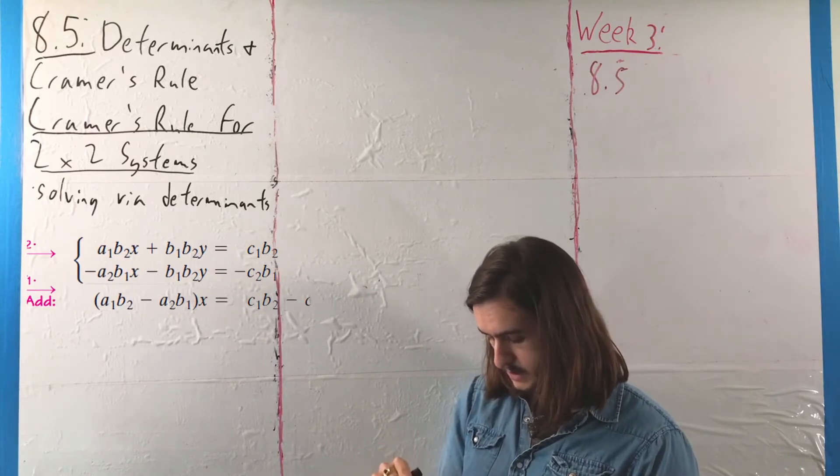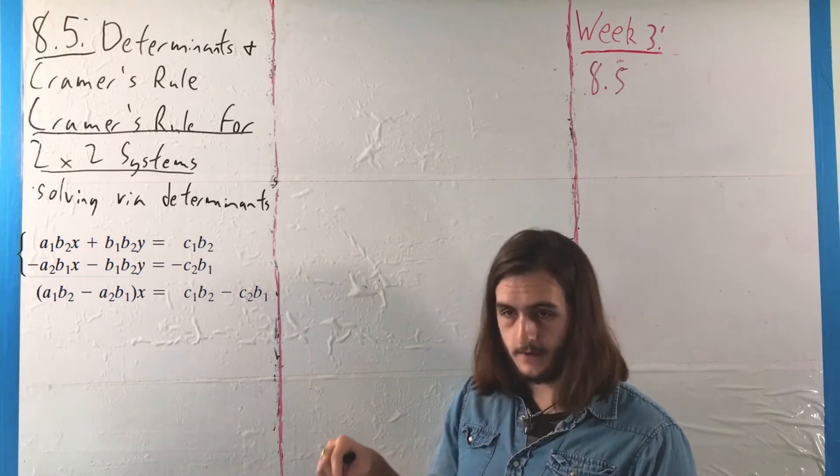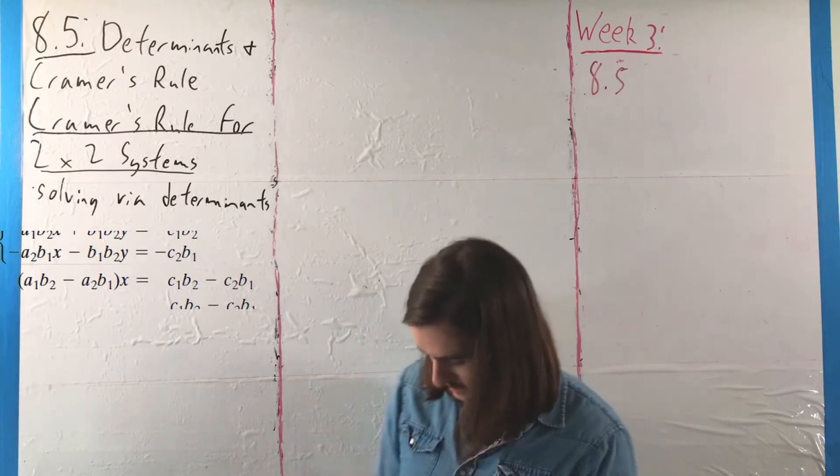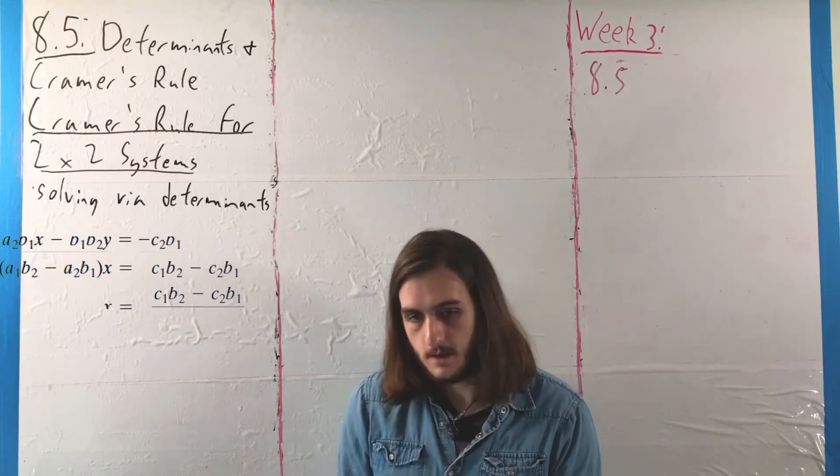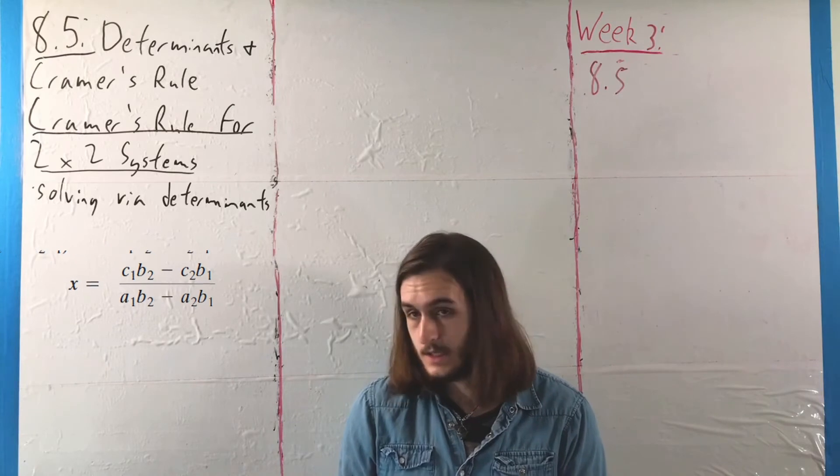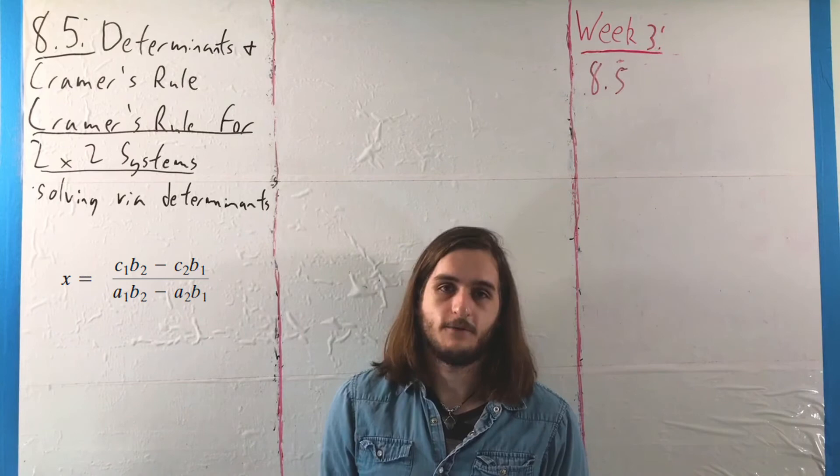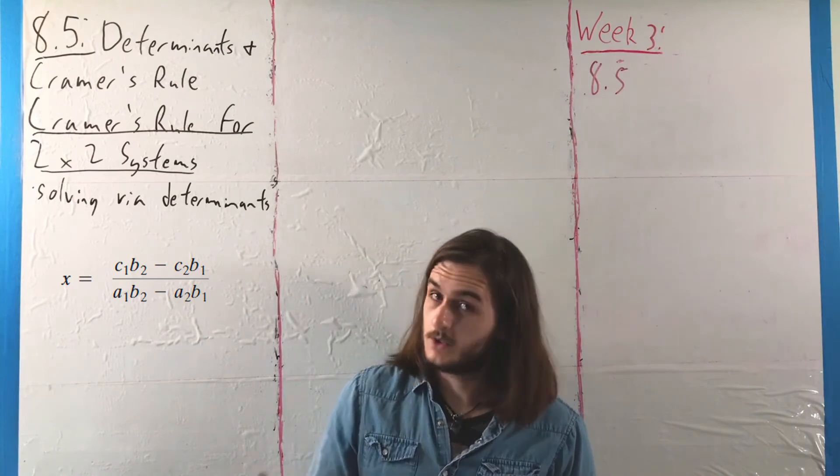C1B2 minus C2B1. And then we divide over, and we have that x is equal to a mess of constants: C1B2 minus C2B1 over A1B2 minus A2B1. And that seems completely worthless and difficult, so we're going to do it